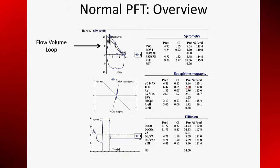I always start with the flow volume loop, which is a graphical representation of the spirometry maneuver. The other graphical form for this information is the volume versus time spirogram. Medicare requires either a flow volume loop or a spirogram to be included with the report. The reimbursement is slightly higher for a flow volume loop than a spirogram, so all modern equipment displays the loop. After describing the flow volume loop, I move to the spirometry — these numbers are derived from data during the expiratory limb of the flow volume loop.